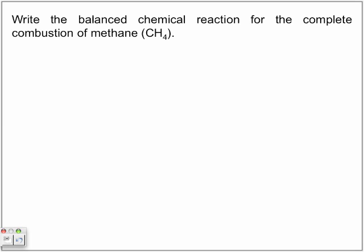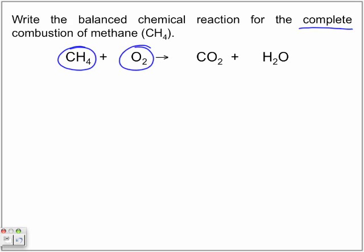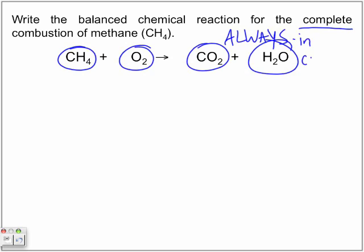Let's write a balanced chemical equation for the complete combustion of methane. Methane is CH4. All combustion reactions involve some kind of a hydrocarbon burning in oxygen — always. Because it is a complete combustion, the final products are carbon dioxide and water, always. You don't have to rearrange atoms; if you know it's a complete combustion, you know the products are CO2 and H2O. The last step is to balance the equation.